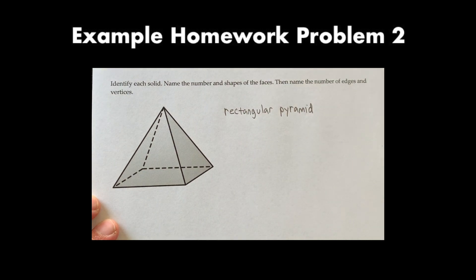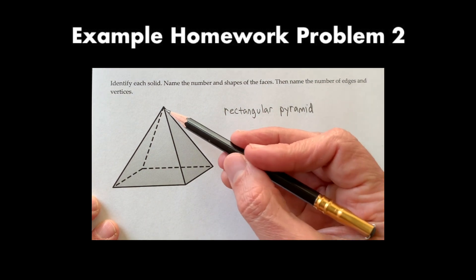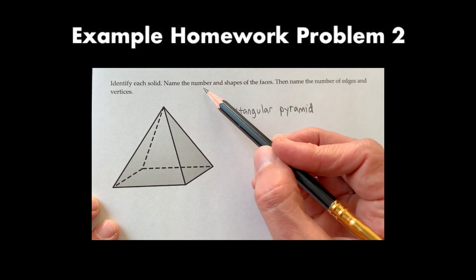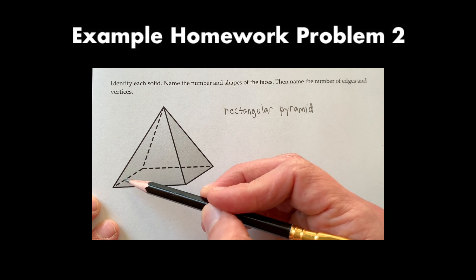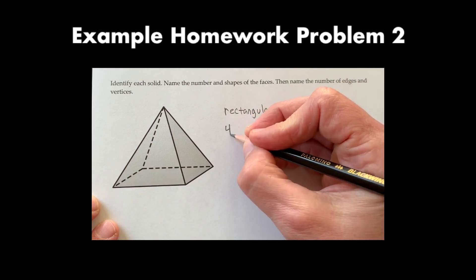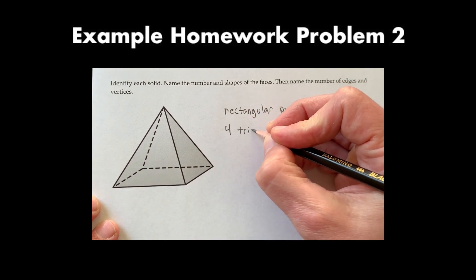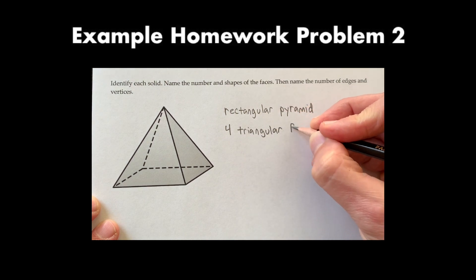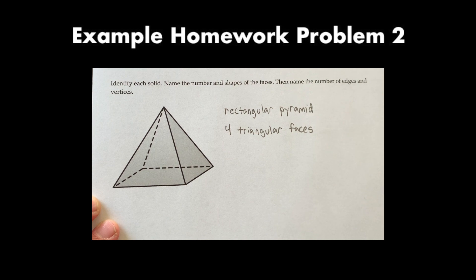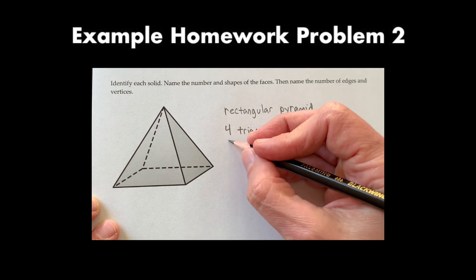It has a rectangle as a base. So that's a rectangular pyramid. Next thing I need to do, I need to name the number and shapes of the faces. So I'm going to go ahead and count the faces. I have a triangle face. I actually have four triangular faces.